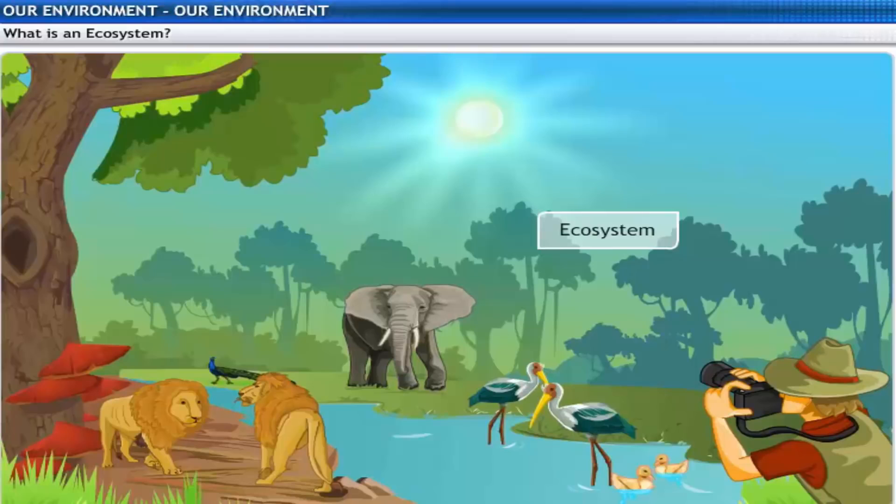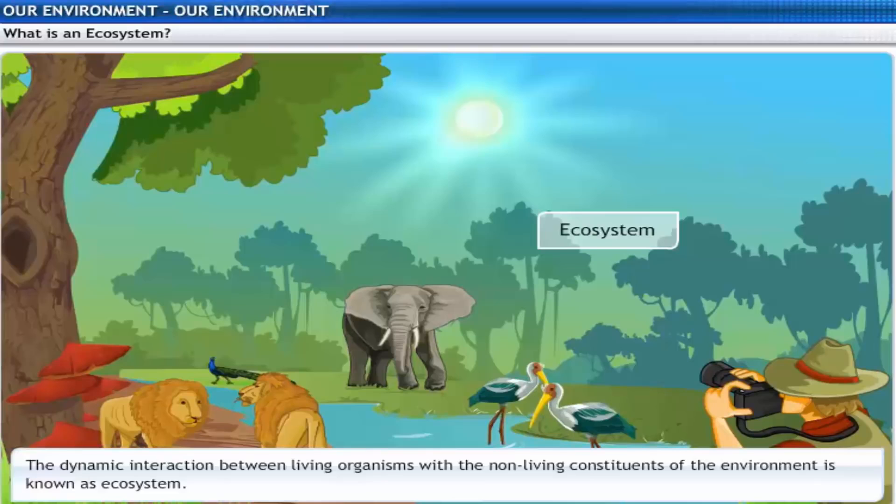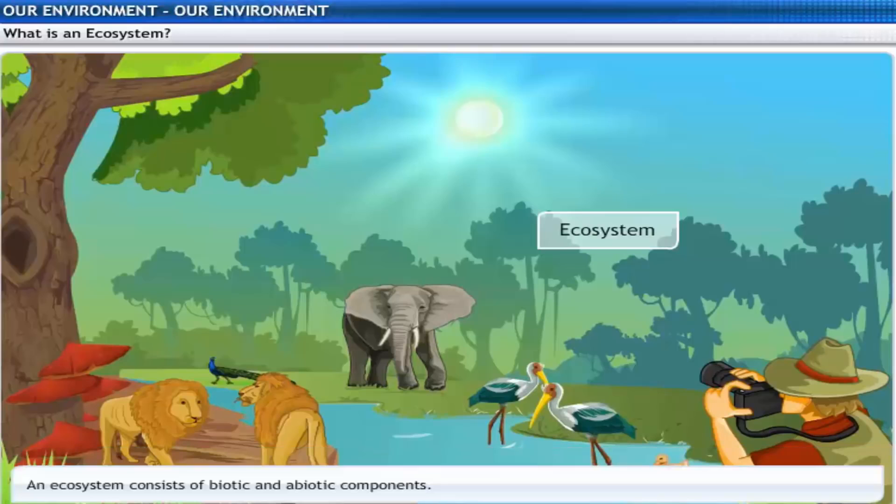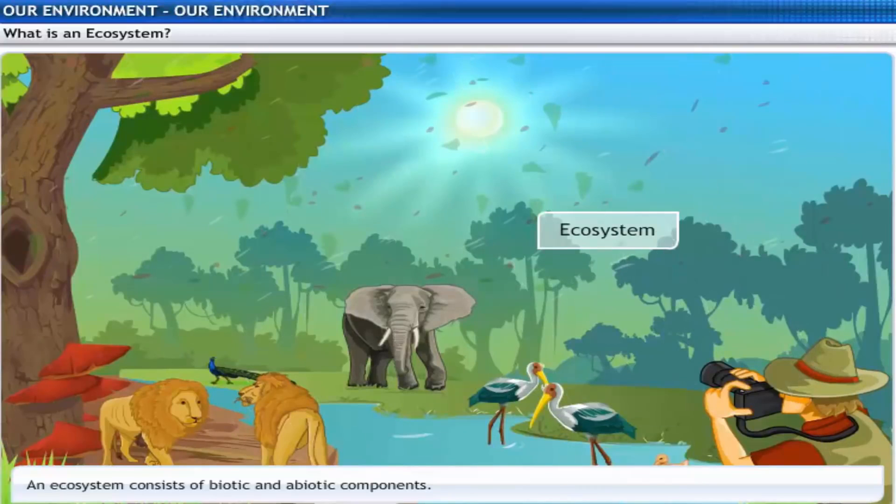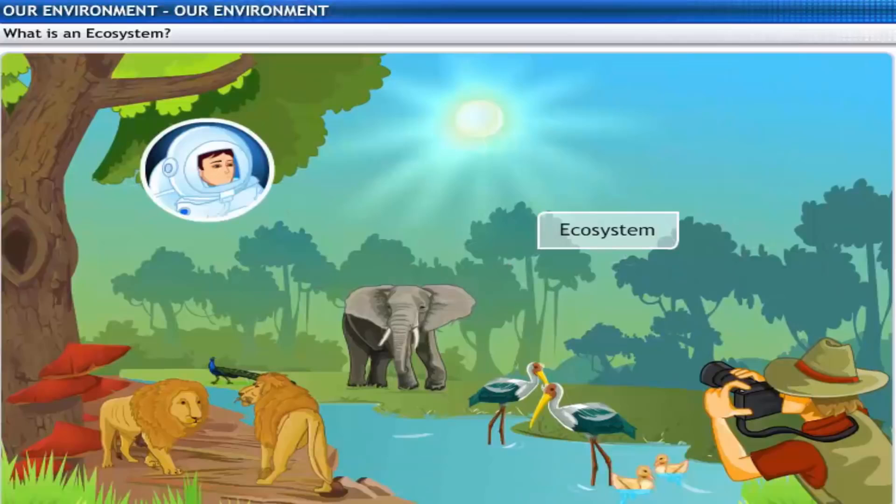All these living organisms in an area interact with the non-living constituents of the environment, and such interaction is referred to as ecosystem. Thus, an ecosystem consists of biotic components comprising living organisms and abiotic components comprising physical factors like temperature, rainfall, wind, soil, and minerals.